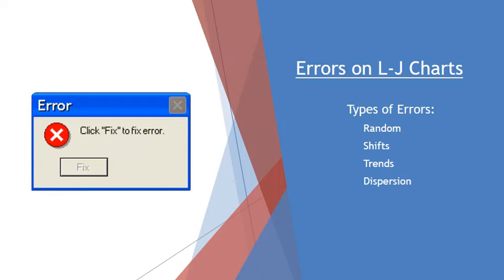So what if we have QC errors? What kinds of errors can we determine from looking at an LJ chart? We can determine several kinds of errors, including random errors, shifts, trends, and dispersions. All of these can clue us into trouble that may be coming or starting, and if we're paying close attention, we can catch this before it becomes a major problem.